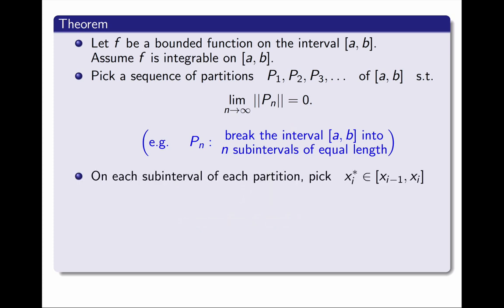Then, on each subinterval of each partition, we pick a point xᵢ*. For example, the simplest choice is to just take the right endpoint of each subinterval.